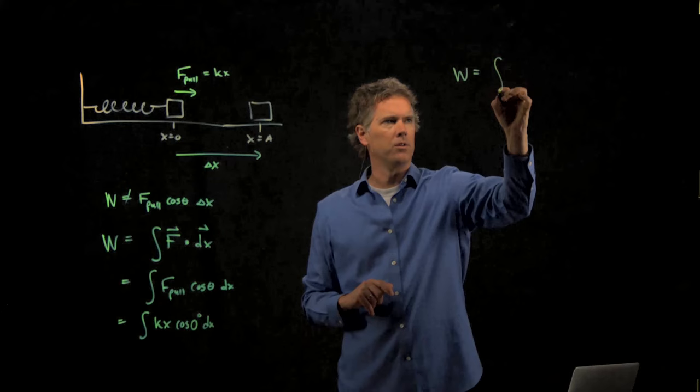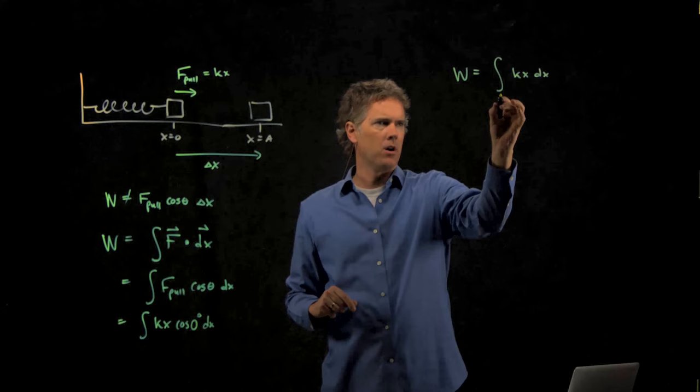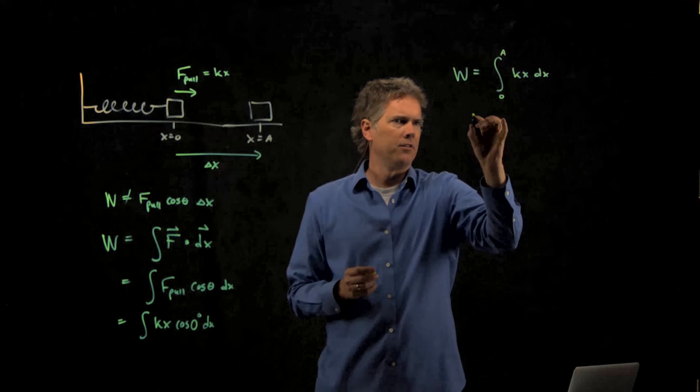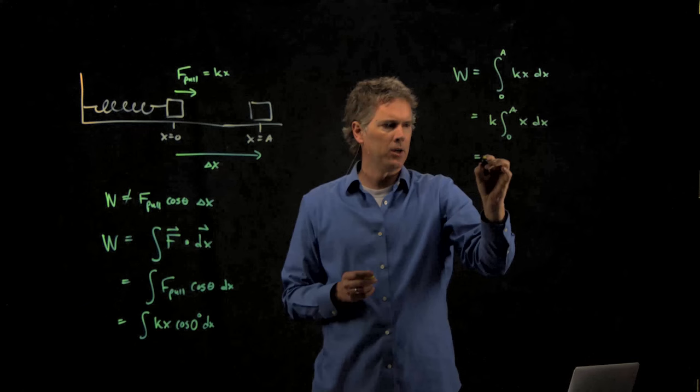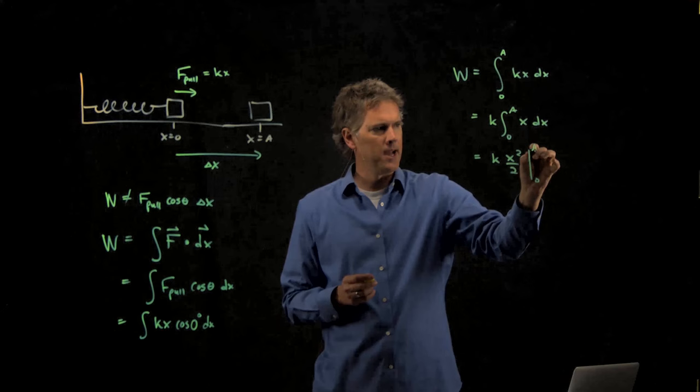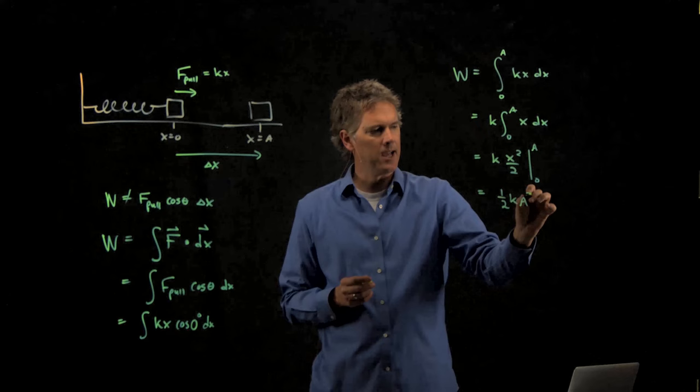And so we get work is equal to the integral of kx dx. And we've gone from x equals zero to x equals a. K is a constant, so that comes out in front of the integral. We know how to integrate x dx. We just get x squared over 2. We're going to evaluate that between zero and a. The zero is going to go away, and we just get one half k a squared.